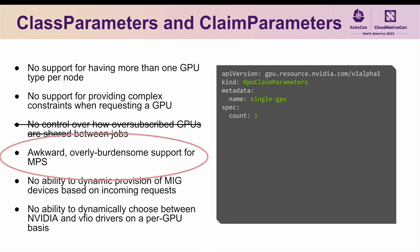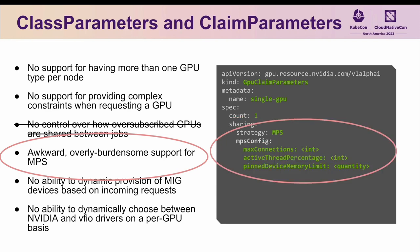To address better support for MPS, a sharing section can be included that defines the strategy with which GPUs allocated to this claim should be shared. One of the strategies that can be selected is MPS, where an optional set of parameters can be provided to customize how the MPS server does its partitioning. As part of allocating the claim, an MPS server will be automatically started in the background with the parameters provided, and torn down once the claim has been deleted.